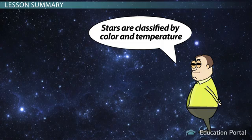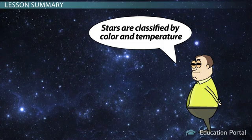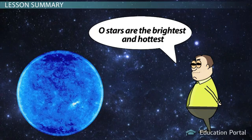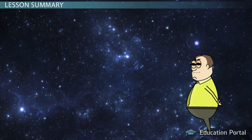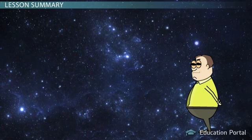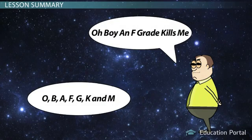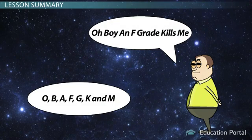Scientists classify stars by their color and temperature into seven categories. The O stars are the brightest and hottest, and the M stars are the coolest and dimmest. The easiest way to remember the categories in order is with a mnemonic such as: Oh boy, an F grade kills me.